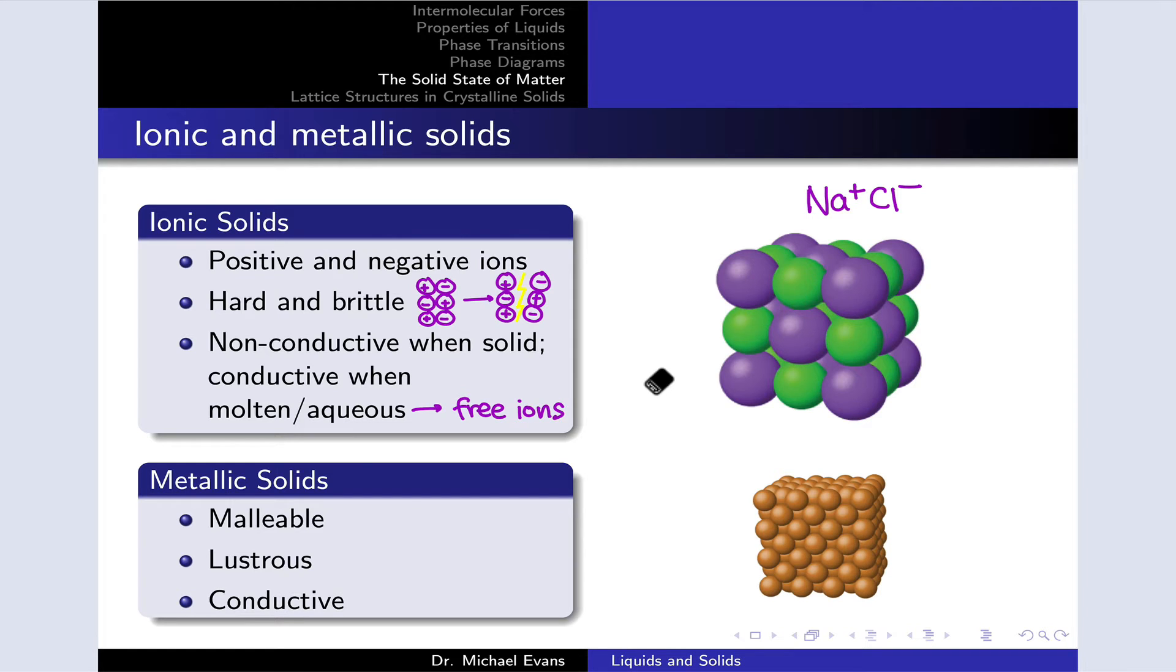Metallic solids are typically elemental materials of the metallic elements, although alloys also fall into this category, and copper is one example of a metallic solid. Metallic solids are malleable. They can be shaped into a variety of different shapes. They're lustrous, shiny. They reflect light, and they are conductive. They can conduct electricity.